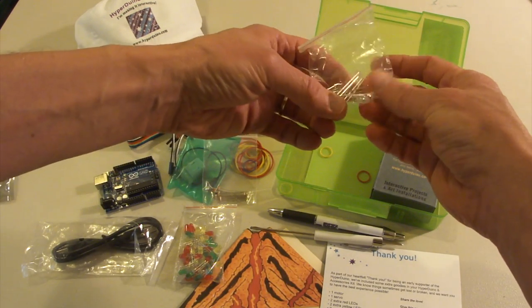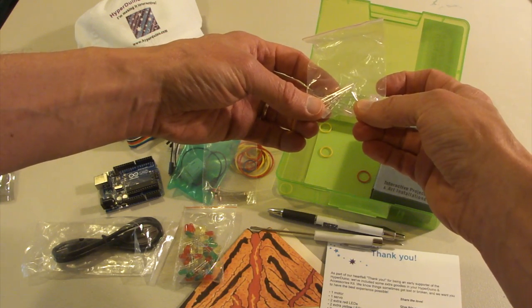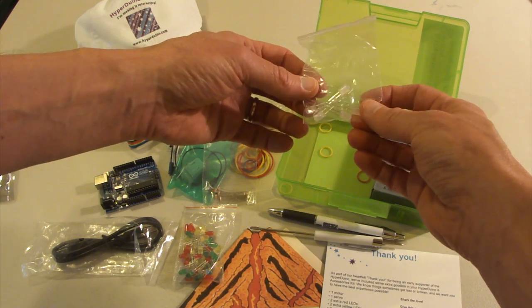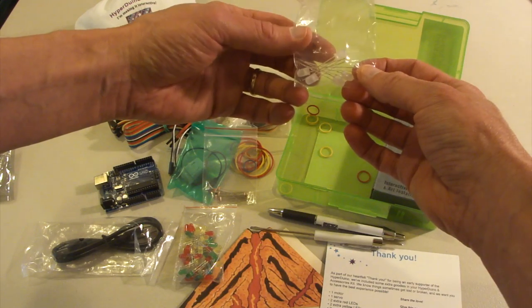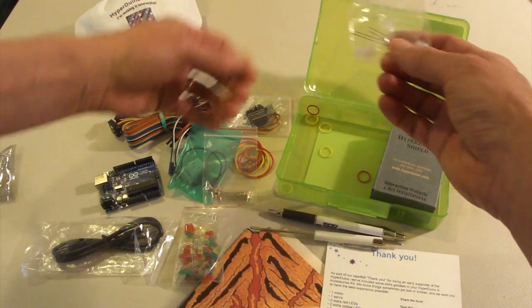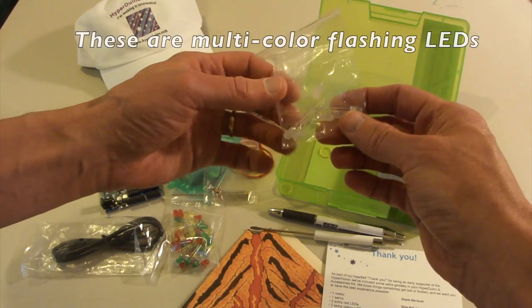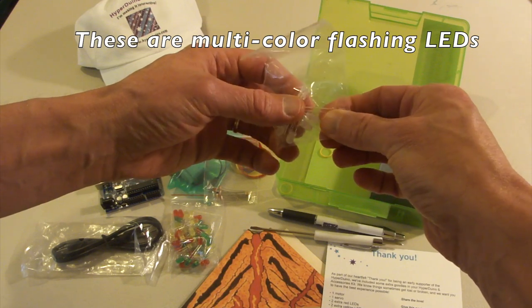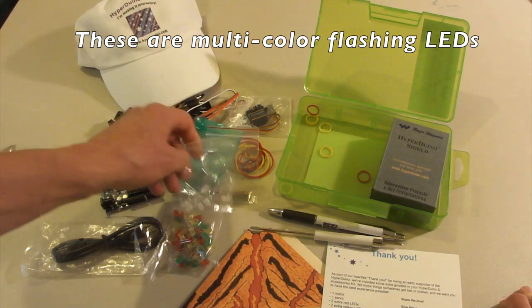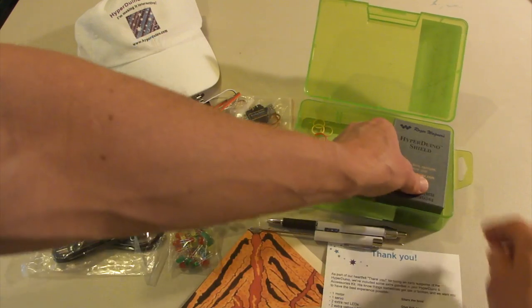And what do we have here? Some more LEDs. I think these are maybe RGB LEDs. They look a little fancier than the other ones. And some more rubber bands.